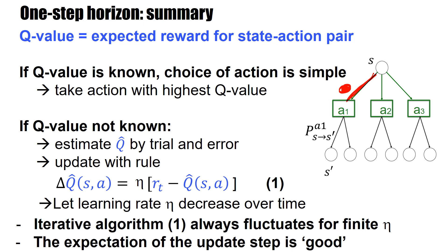But if the Q value is not known, then we have to estimate Q hat by trial and error. And we update with this update rule one. And we let the learning rate eta decrease over time. And the claims are that this iterative algorithm will always fluctuate for finite eta. But in some sense, the expectation of the update step is good. It's going in the right direction for small eta.